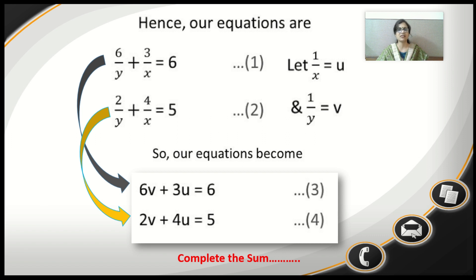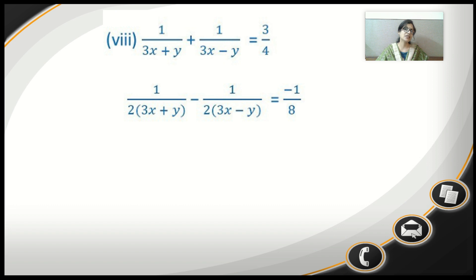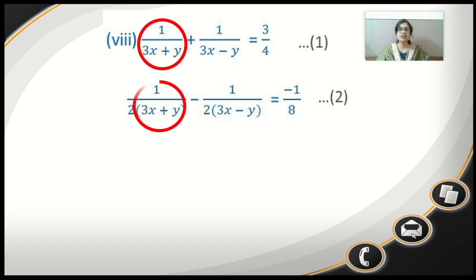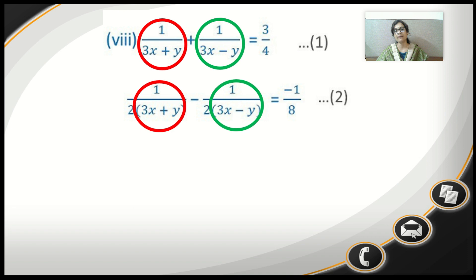We move to the eighth sum — the seventh sum is left as homework since it is similar to the sixth. This is from Exercise 3.6, Question 1, eighth sum. Here the denominator of the first equation is 3x plus y, and in the second equation there is a similar term plus an additional term: 3x minus y at the denominator, and in the second equation it is 2 times (3x minus y). Since both equations share these two terms, we will substitute for them.